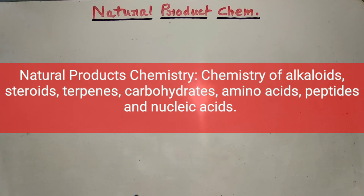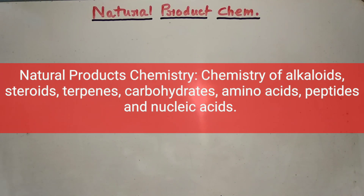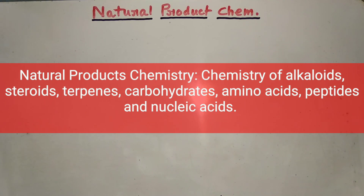In this video, I will talk about what to read from this chapter and what you don't actually need to read. Because alkaloids, steroids, terpenoids, and terpenes — these topics don't have that much importance in the JEE examination. My suggestion is you can easily ignore the alkaloids, steroids, and tarpenes.